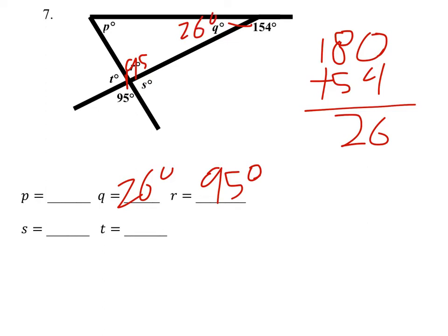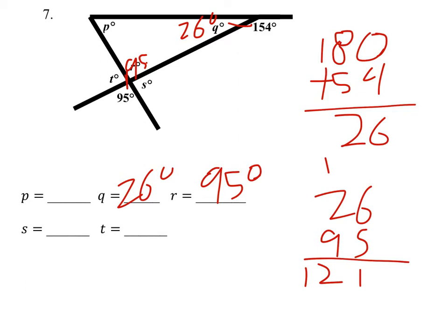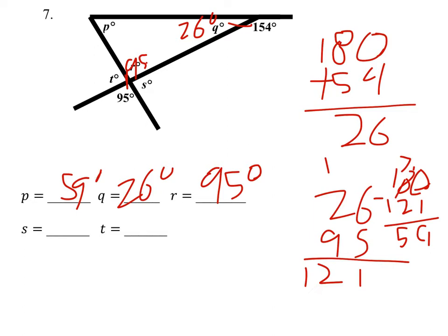When you add up those ones — 26 plus 95, that equals 121 — then you have to subtract that from 180, and that would equal 59. So P would be 59 degrees. And then because 95 plus S equals 180, you do 180 and then subtract 95.